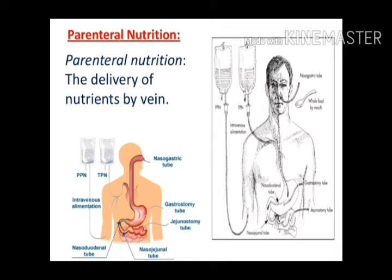Parenteral nutrition is giving nutrition directly into the veins. If you see the diagram properly, there are all types of tubes: nasogastric, which we have already seen; gastrostomy directly in the stomach; jejunostomy in the intestine; nasojejunal at the junction between jejunum and duodenum; and nasoduodenal, which goes directly into the duodenum.